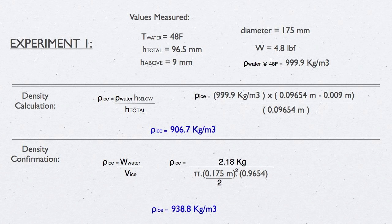The total height of the ice block we measured to be 96.5 millimeters. And the height of the top of the block above the surface of the water was 9 millimeters. The diameter of the block was 175 millimeters. And the weight of the block was 4.8 pounds.